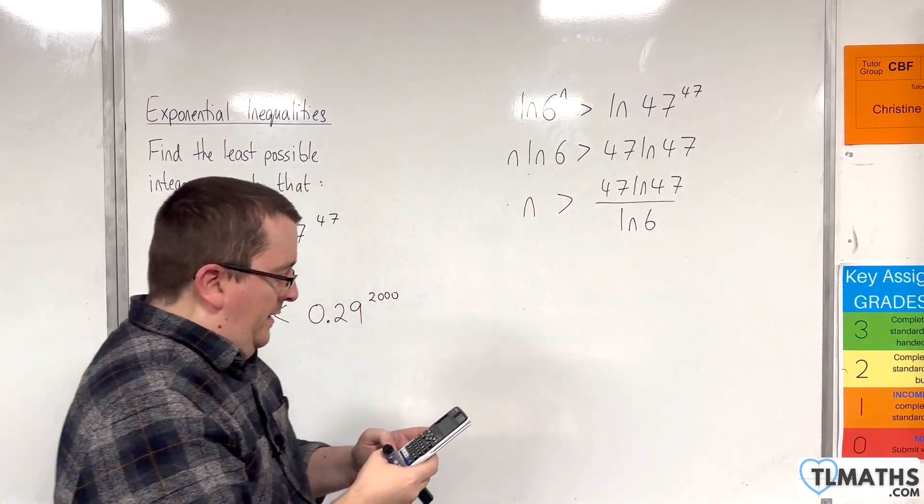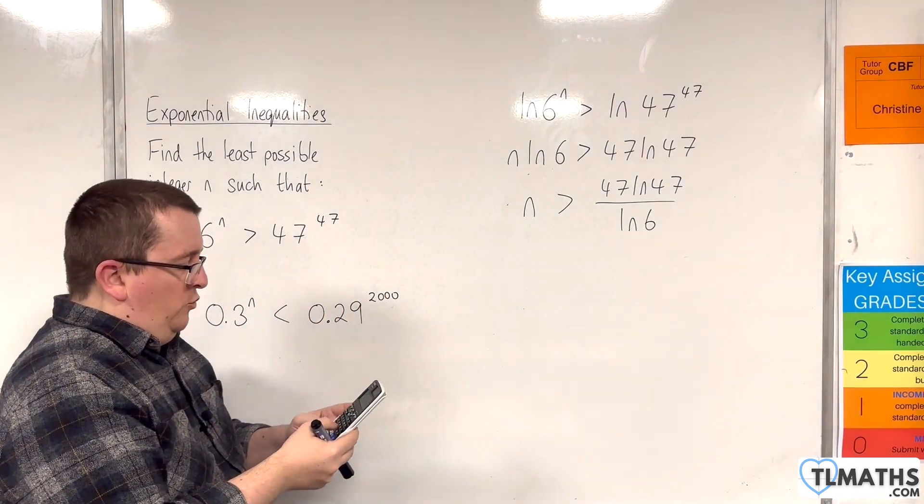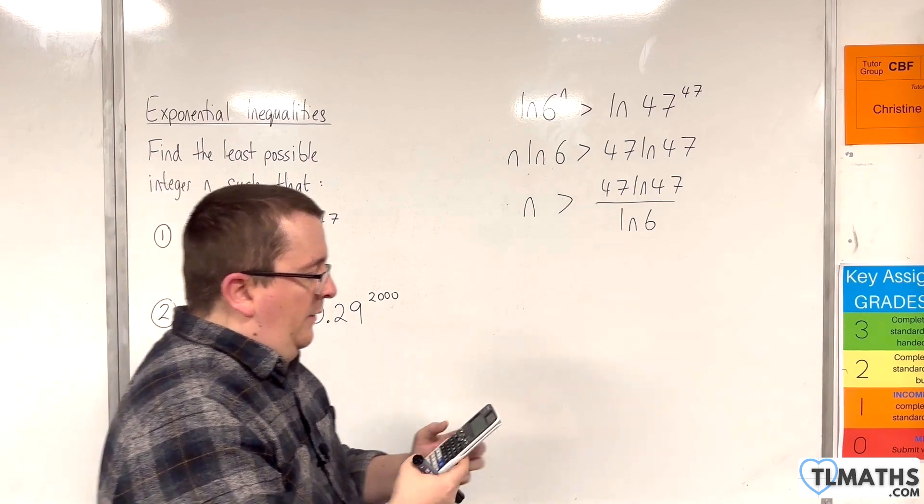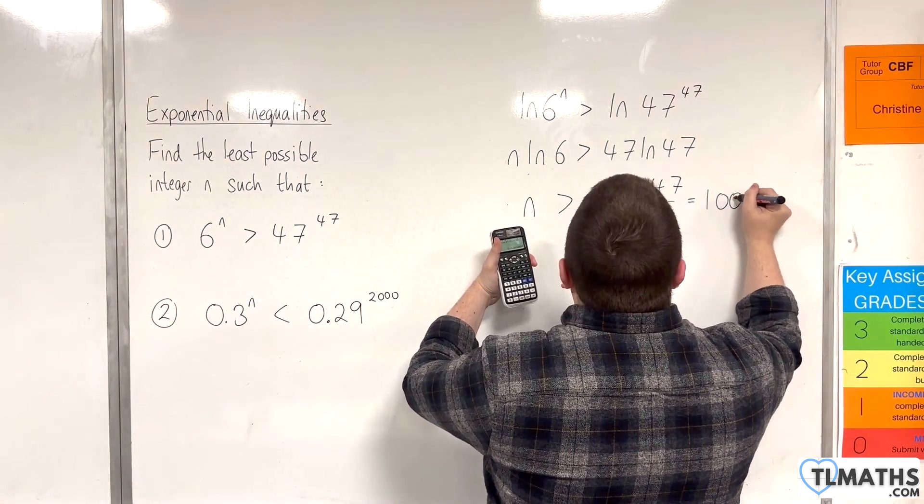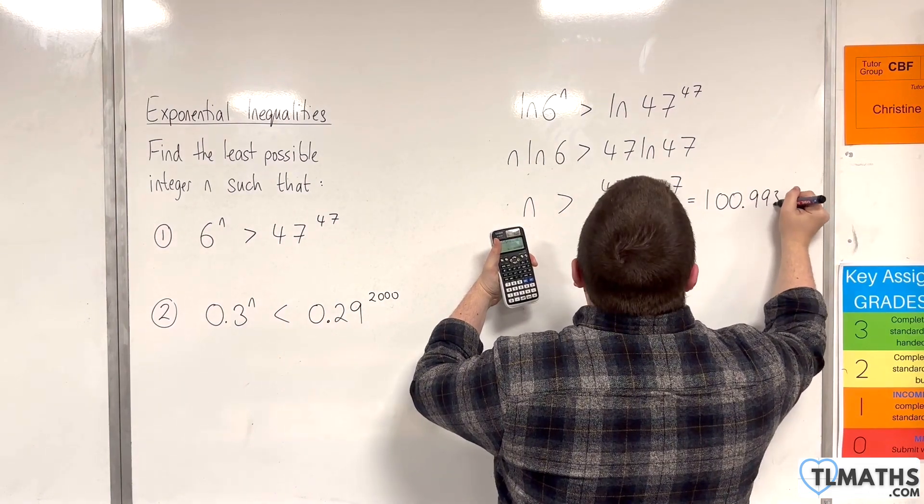So I'm going to put that in a calculator. So 47 times the natural log of 47 divided by the natural log of 6. And that gets us 100.9939 etc.